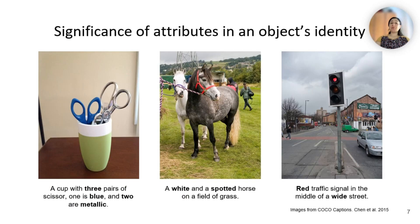Attributes are important for an object's identity — they can help distinguish different instances of the same class, such as the blue scissors or the white horse in the pictures. Recognizing attributes can enable better interpretation of the scene and decision-making, such as knowing when to stop at a red traffic light.